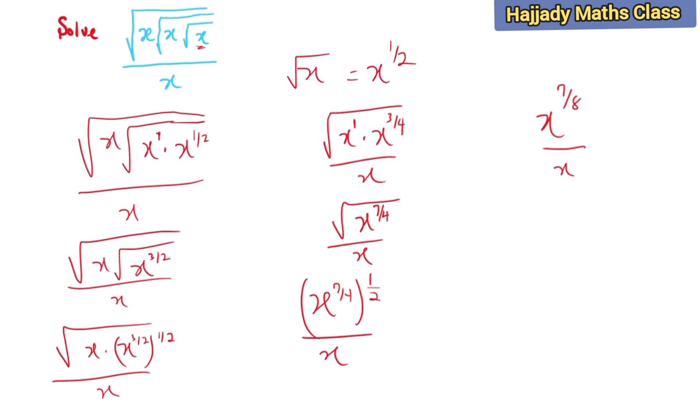So applying the rule of indices also, I'm having x raised to power 7/8 divided by x over 1, which is the same thing as x to the 7/8 minus 1, and finally I'm having x raised to power negative 1/8. So this is my answer.